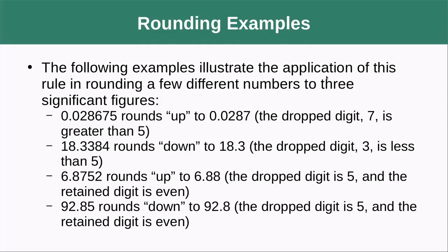The following examples illustrate the application of this rule in rounding a few different numbers to three significant digits. So if we're going to round this one to three significant digits, we're looking to round to this number and we're going to base it off of this number right here, which is a 7. So 7 is greater than 5, so we round up and we get 2.67. We rounded this 6 up to a 7.